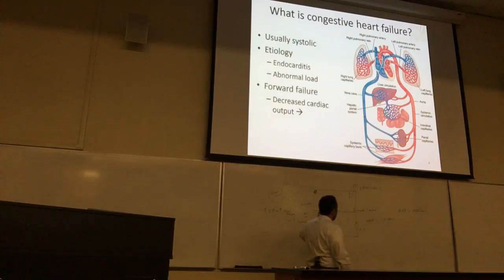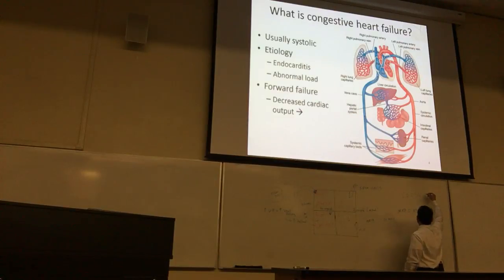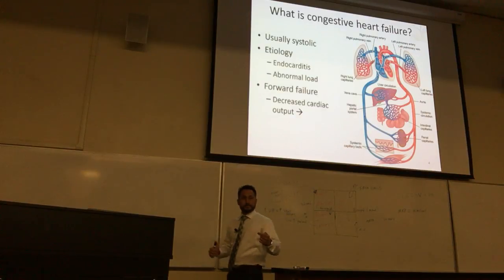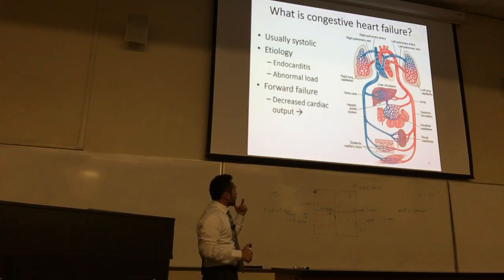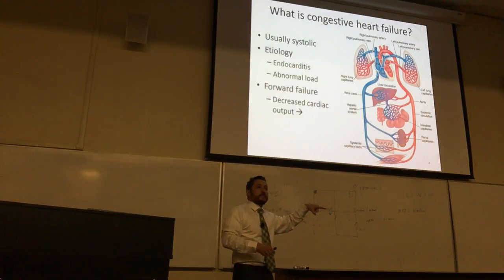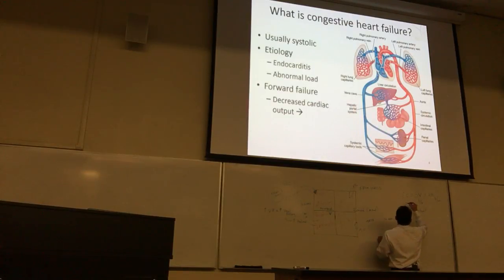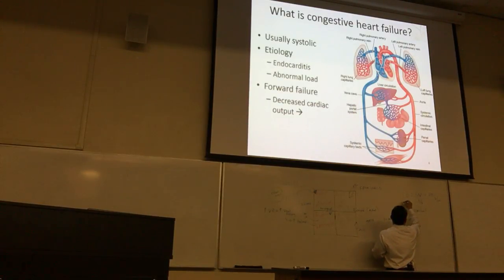If mean arterial pressure rises — your systolic and diastolic blood pressure start to increase — your heart has to work harder to get out the same amount of blood. That's the strain on the heart. We say it's a forward failure, meaning we lose our cardiac output. Cardiac output equals stroke volume times heart rate. Stroke volume is the volume the heart moves per beat, and heart rate is the number of beats per minute — so cardiac output is liters per minute.